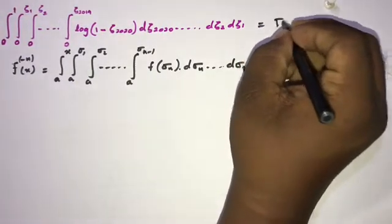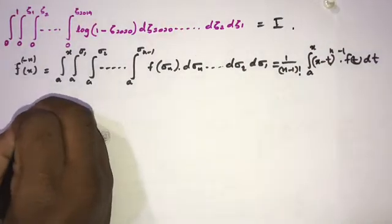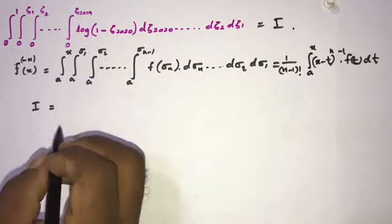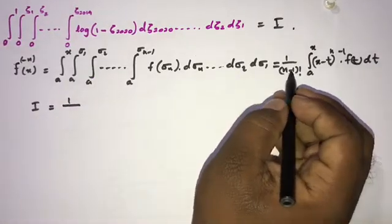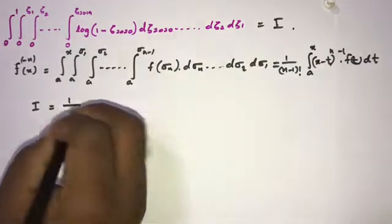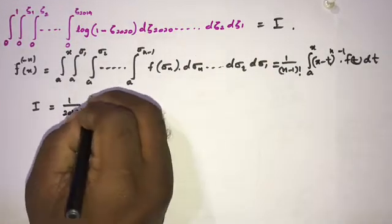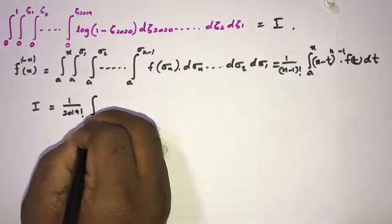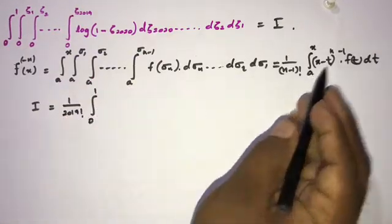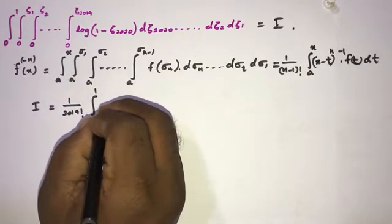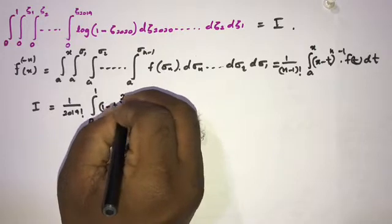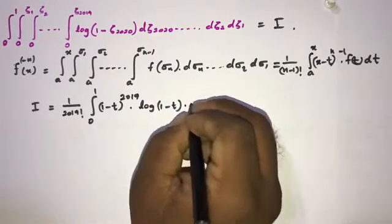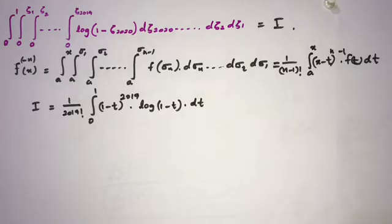We can call our integral I. Applying the Cauchy formula with n = 2020, we get I = (1/2019!) times the integral from 0 to 1 of (1 − t)^2019 · ln(1 − t) dt, since here x = 1 and a = 0.